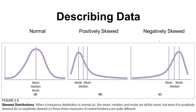Conversely, a negative skew happens if we add some more extreme low scores. The tail points off towards those very low or negative scores, meaning the data is negatively skewed. The different central tendencies get dragged in the opposite direction, pulled by those outliers, depending on the shape of our data.